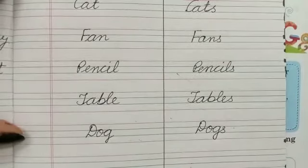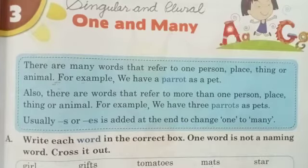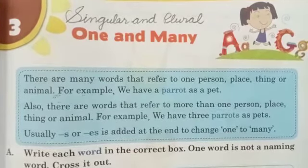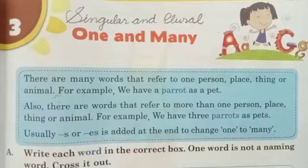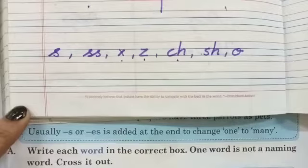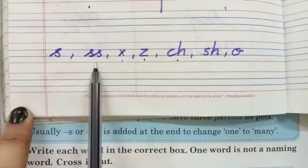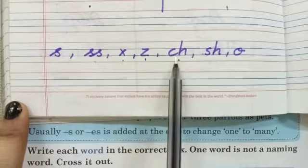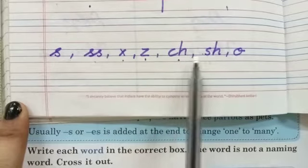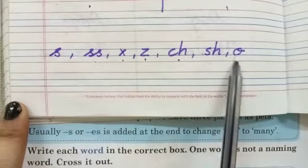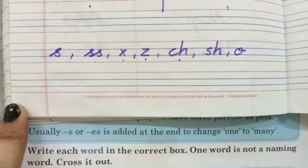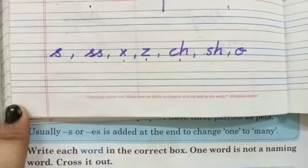Okay children, if a singular word ends with S, double S, X, Z, CH, SH, or O, we generally add ES to the end of the word.